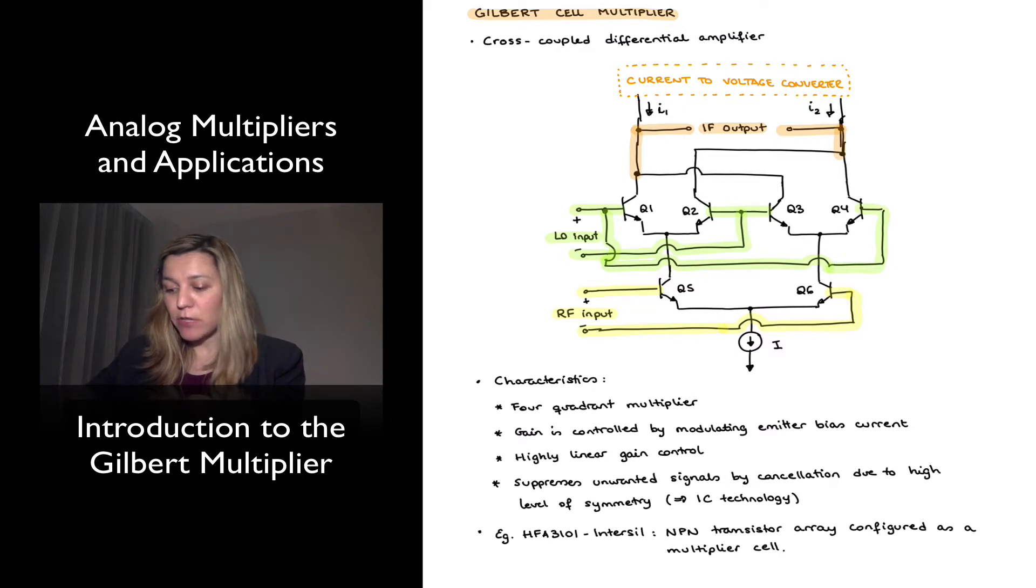Here is the circuit for the Gilbert Cell. Notice that it consists of a cross-coupled differential amplifier.